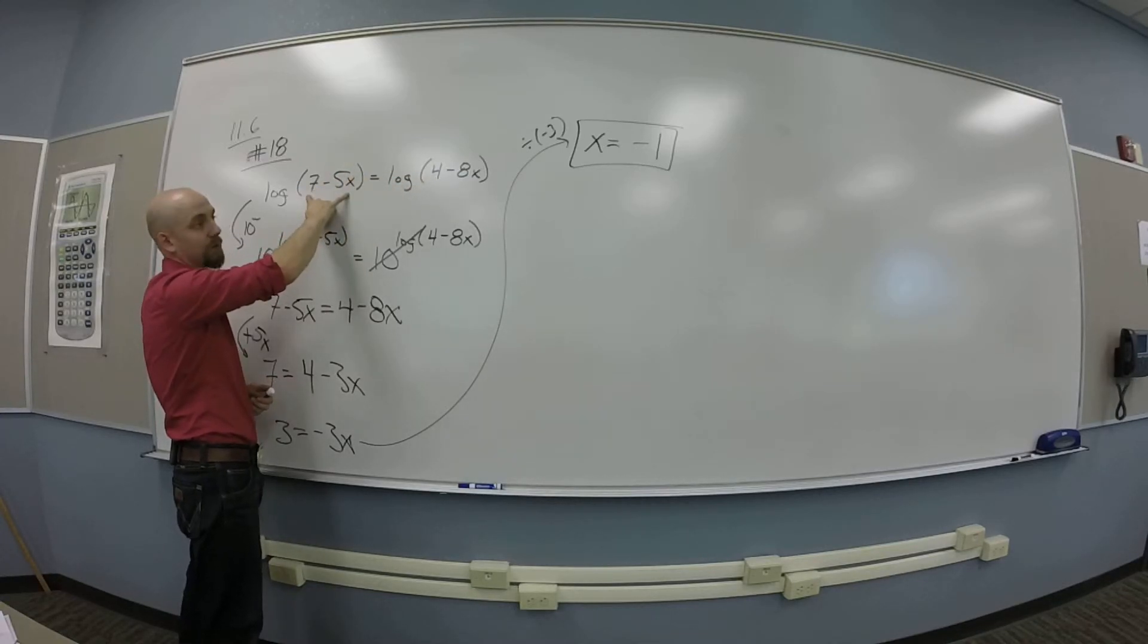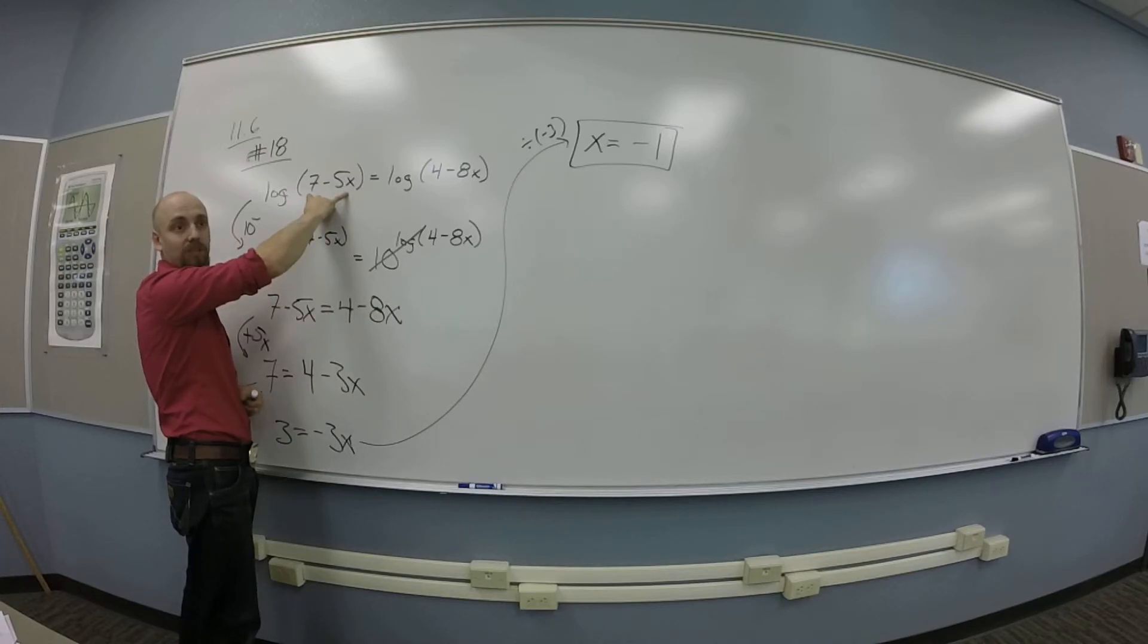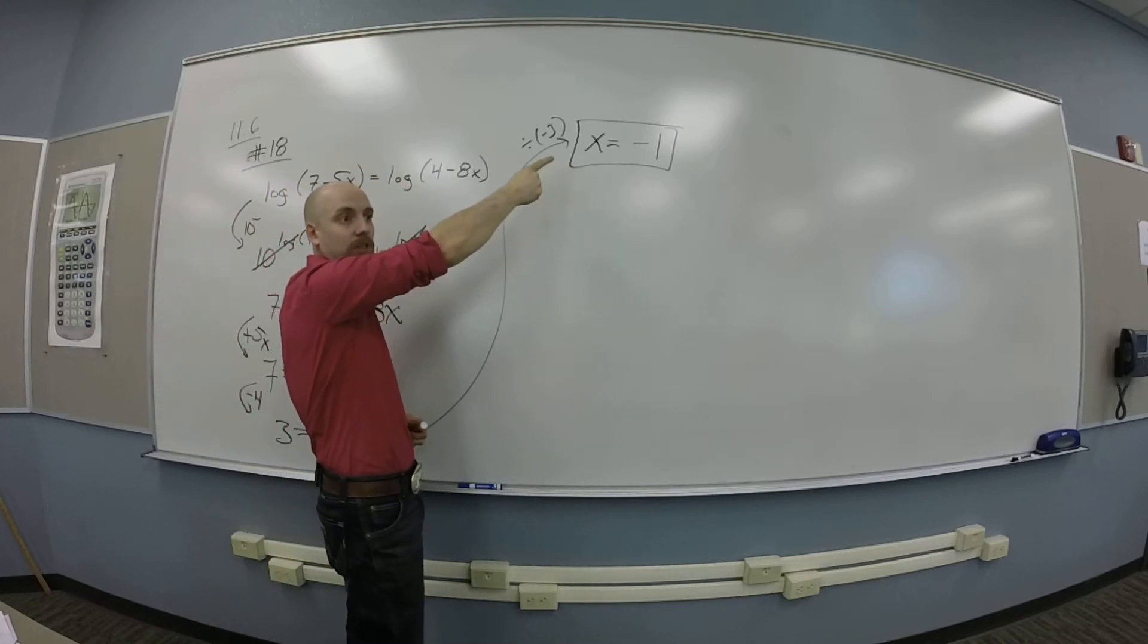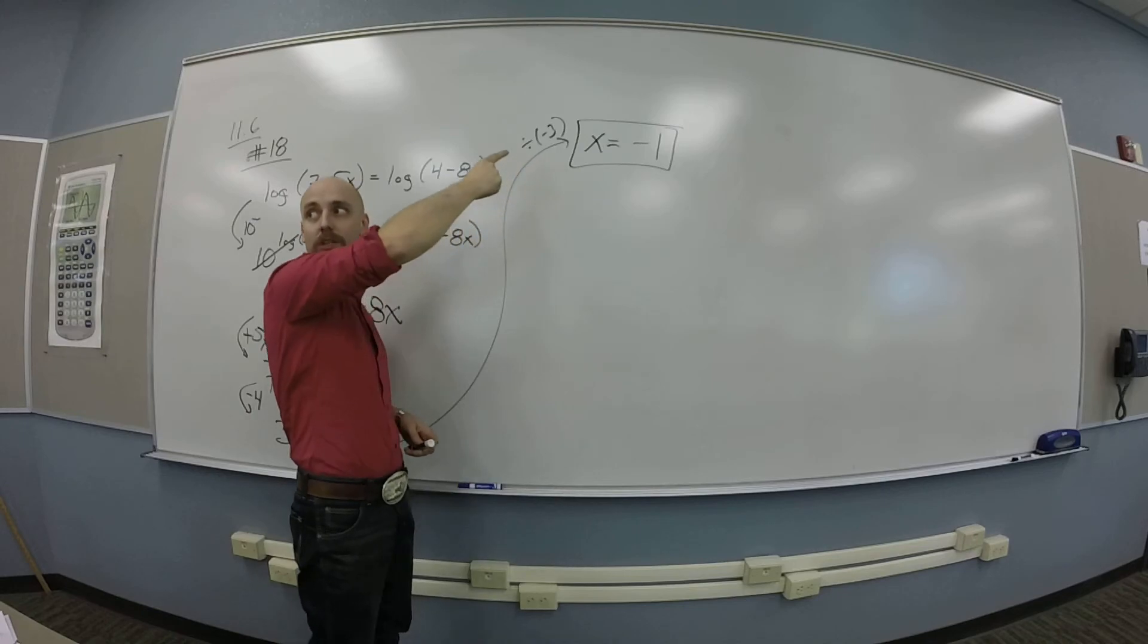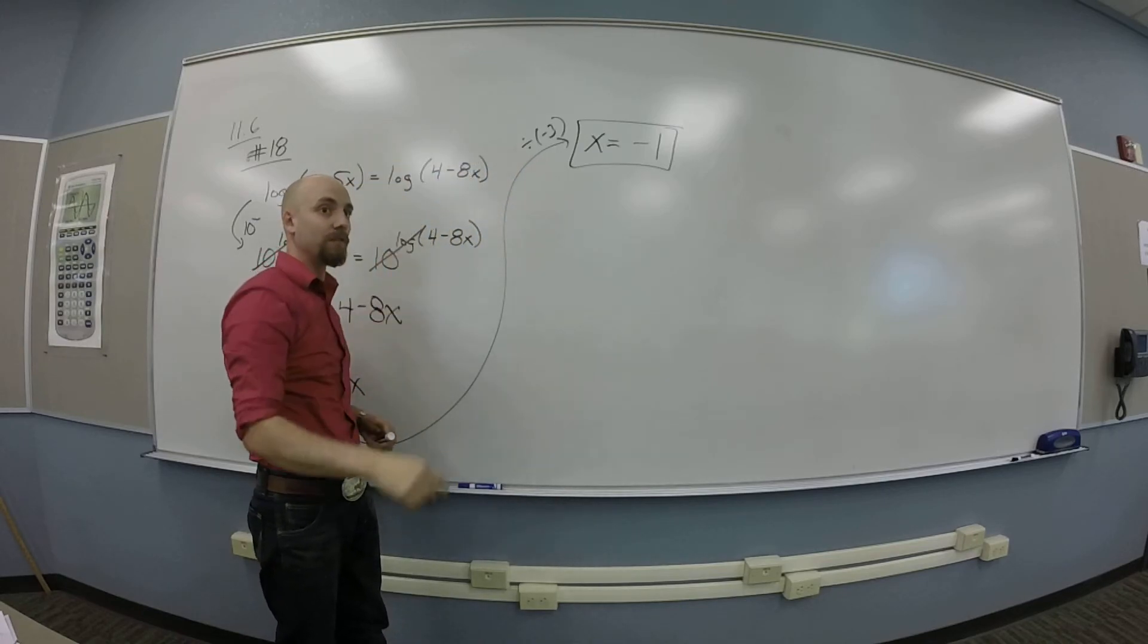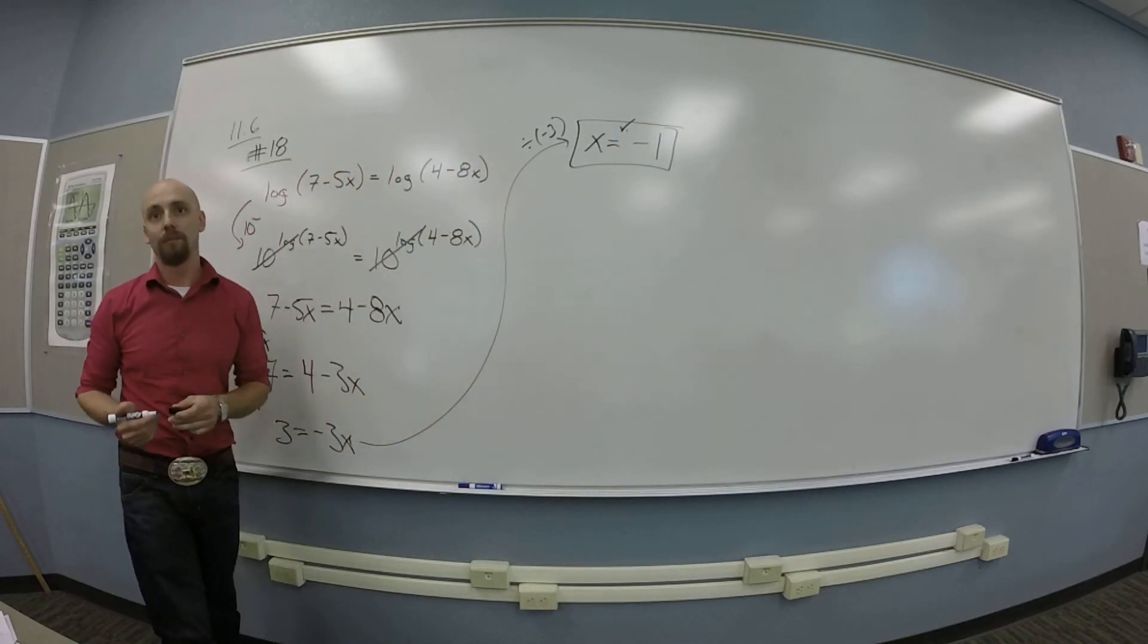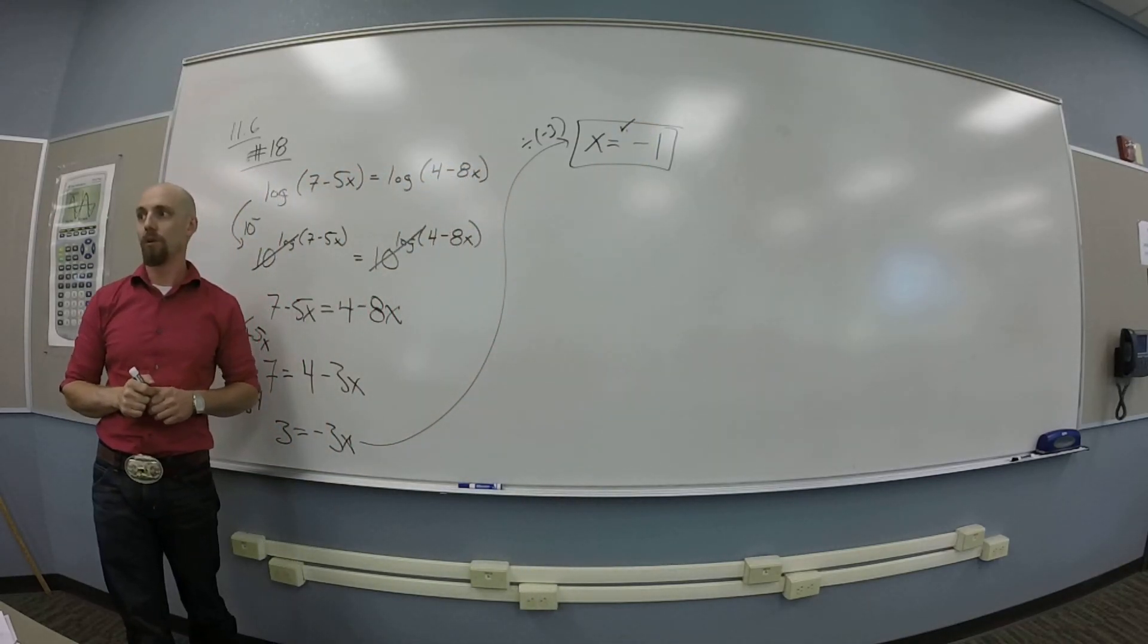So I've got to check when x is negative 1. Is 7 minus 5x, what is that? That's 7 plus 5. 7 plus 5 is positive, so I'm okay with that one. And 4 minus 8x, when x is negative 1, is 4 plus 8. 4 plus 8 is positive. Perfect. Check these are the same. Cool?